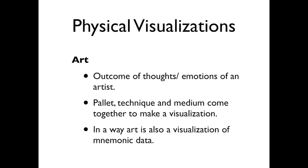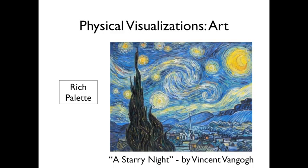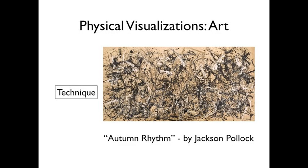An artist tries to put thoughts or emotions on a canvas or a chosen medium. The colors, medium, and technique the artist chooses will decide the end result of a visualization. Art is also a visualization of mnemonic data — memories you recollect and put onto your medium of choice. This example is a painting titled 'The Starry Night' by Dutch post-impressionist painter Vincent van Gogh. The reason I point it out is to highlight the rich palette — the vibrant blue colors and mysterious sky. He made this painting while in a sanatorium, and it represents his volatile state of mind.